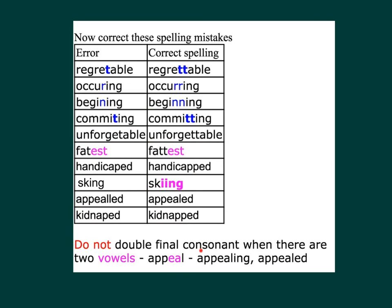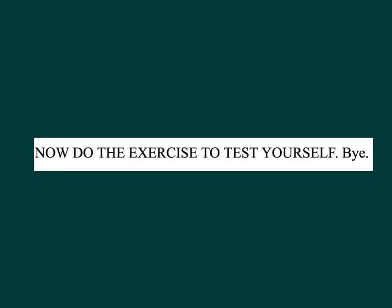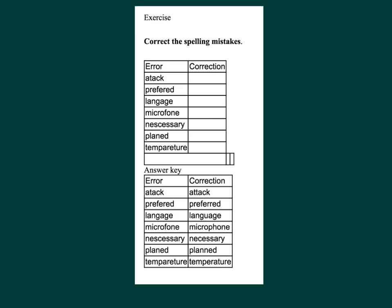Do not double the final consonant when there are two vowels: appeal → appealing → appealed. Now do the exercise to test yourself — exercise and answer key. Correct the spelling mistakes.